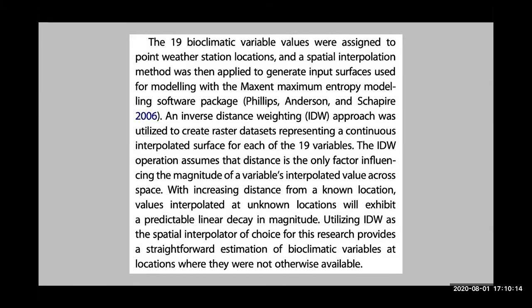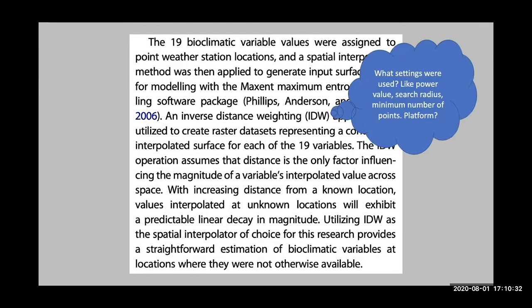Yet another one: 'The 19 bioclimatic variable values were assigned to point weather stations and a spatial interpolation method was applied to generate input surfaces for modeling' — going on to talk about inverse distance weighting. But inverse distance weighting has many parameter settings: the power value, the search radius, the minimum number of points. What platform was used to generate this interpolation?